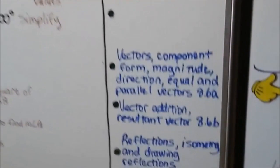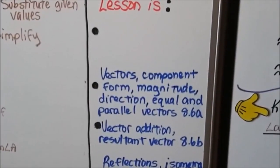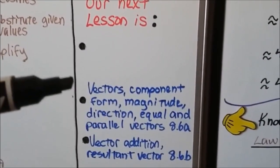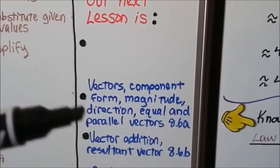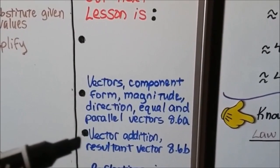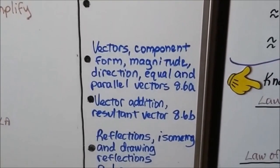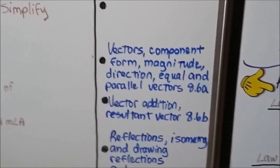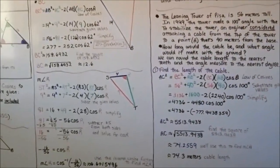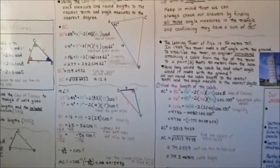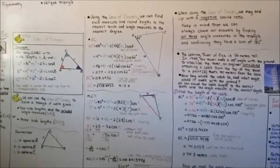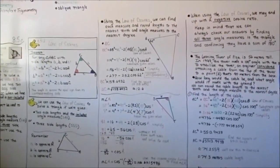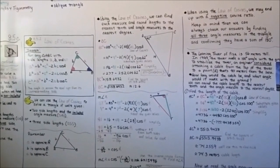We've only got two more videos left for chapter eight. In the next one, split into two parts, we'll talk about vectors — component form, magnitude, direction, equal and parallel vectors — and then vector addition and resultant vectors. After that, we'll move on to transformations in chapter nine. I hope I explained the law of cosines well enough, and I hope you have a great day. See you next time.